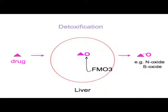By adding that oxygen onto the drug, FMO3 creates a chemical which can be an N-oxide if the drug has a nitrogen and the oxygen goes onto the nitrogen. And actually, many drugs have a sulfur, and FMO3 can add an oxygen onto the sulfur as well, producing a chemical called the S-oxide.